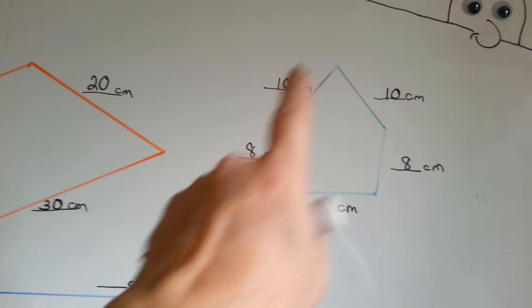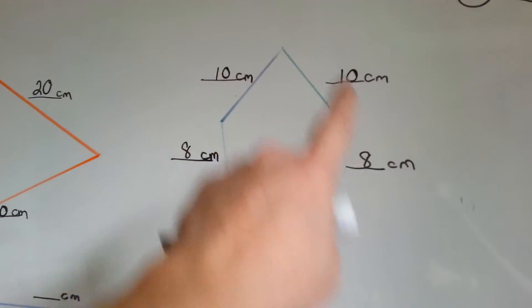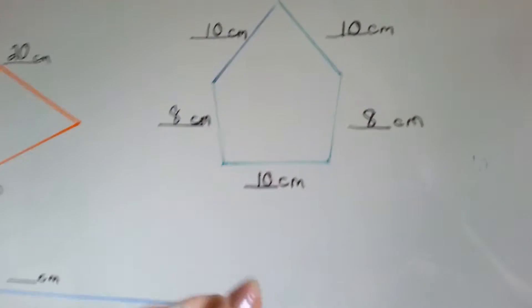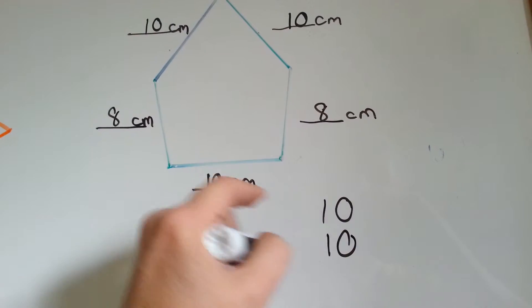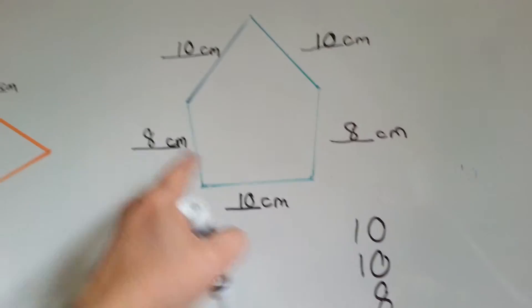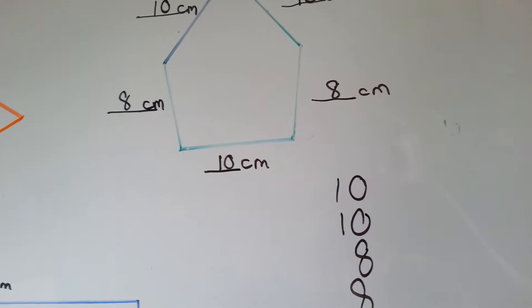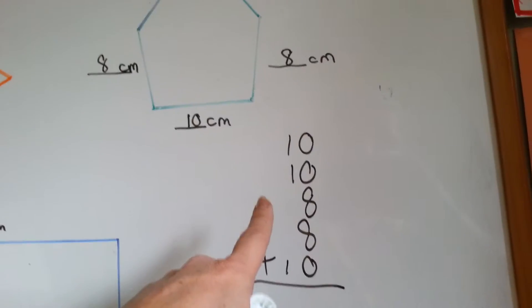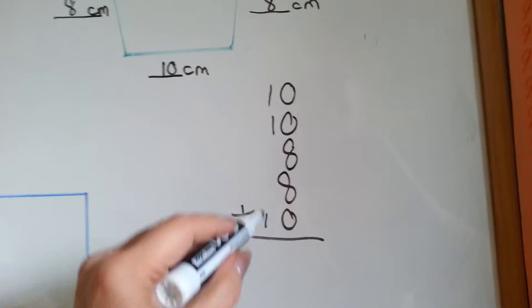And what we do is we add up these numbers, and that will give us the entire edge measurement. So we've got 10, and another 10, and 8, and 8, and another 10. And if we add these up, we will have the perimeter of this pentagon shape.